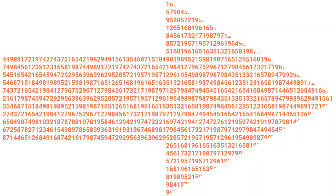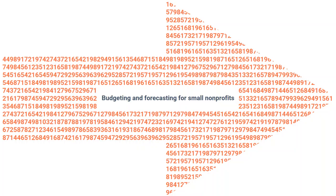Today we're going to talk about budgeting and forecasting. This is the second piece of our nonprofit financial management discussions, coming from last week where we talked about financial reporting and what those basic statements look like. We'll review that a little bit in this presentation. The bulk of what I'm going to show you are templates that you can use to do budgets and cash flow work on your own — things I actually use in the field when consulting with organizations of all sizes. Walking through those actual ways to use this is more hands-on than just a theoretical discussion.